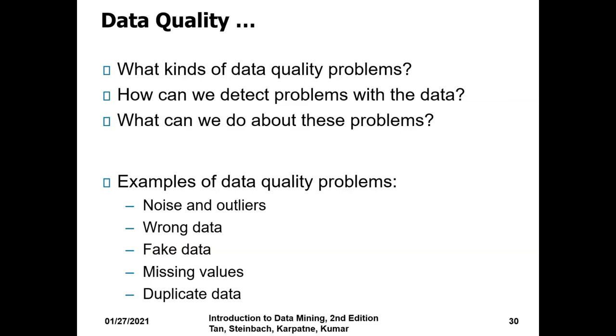Examples of data quality problems are noise and outliers. Noise means unnecessary additions to the original data. Outliers mean any data points which are away from most of the points. Wrong data which is not correct, fake data which is input by malicious people.